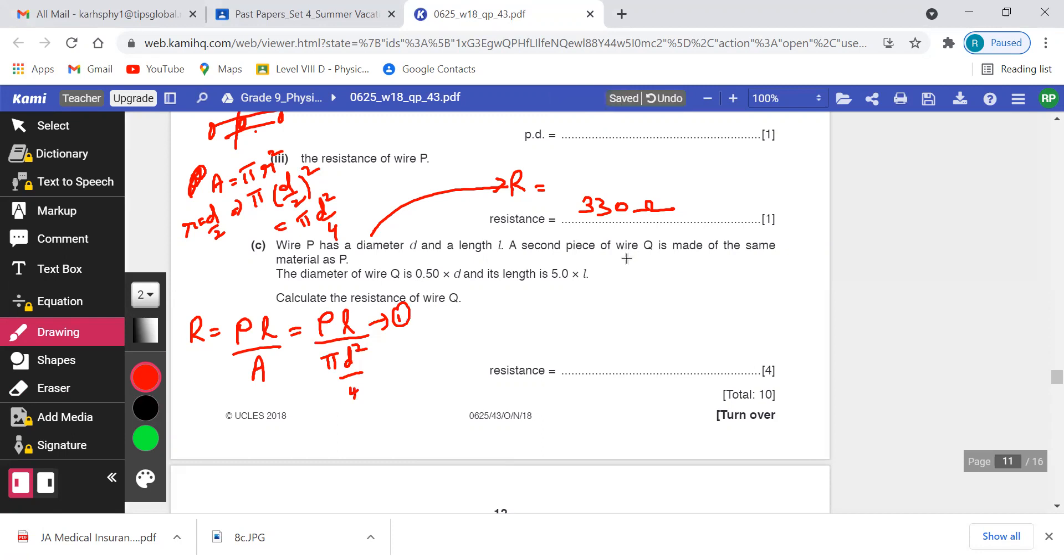Now they are saying there is another wire Q that is also the same material as P. Wire P and wire Q have the same material, but the diameter of Q is 0.5D. I'll take it as D' for Q equals 0.5D, and the length L' for Q is 5 times the length of P.